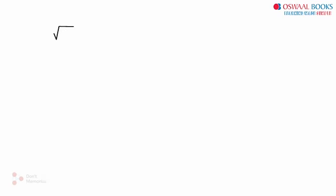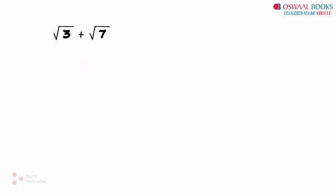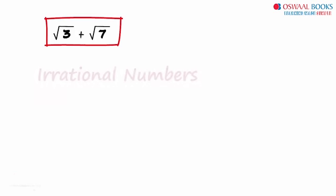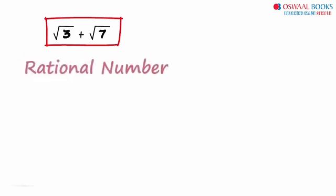How do we rationalize something like root 3 plus root 7? This is actually a sum of two irrational numbers. What do we multiply this with to get a rational number?